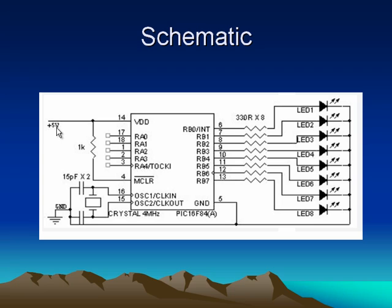I supplied DC five volts to the circuit, because for correct operation the microcontroller requires a clean and smooth DC five volt supply. You can see there are only a very limited number of components. This is the advantage of microcontroller programming — using microcontrollers you can use very few components to implement these kinds of projects.